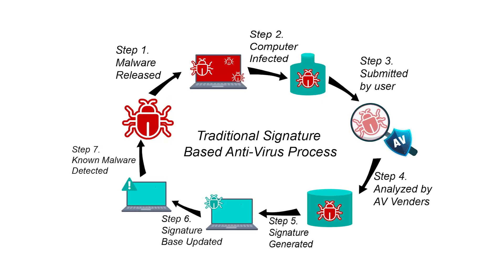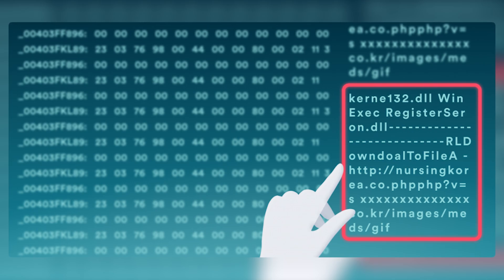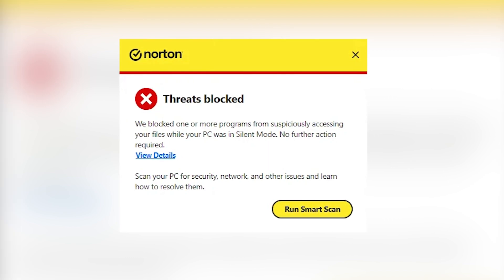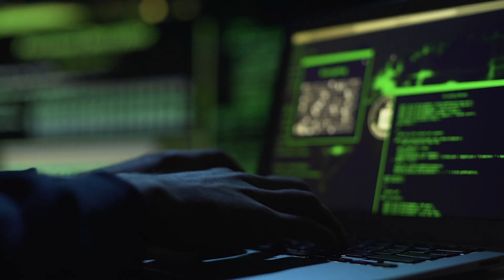For our first detection method, we have signature-based detection. Signature-based detection is the oldest and most straightforward method of identifying ransomware. It involves creating unique signatures or patterns that match known ransomware strains. Antivirus programs compare files against a database of signatures, and if they find a match, the file is flagged as potentially malicious. While it is effective against known ransomware variants, signature-based detection has some limitations. It relies on a comprehensive and up-to-date signature database, meaning it may fail to detect new or polymorphic strains that can alter their signatures to evade detection. As attackers continually refine their tactics, signature-based methods alone are no longer enough for effective protection.